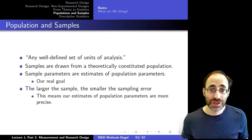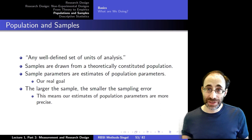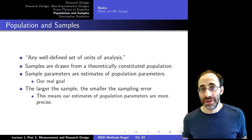In contrast, if your population is individuals living in North Carolina this year, that's your population. This is all determined by the theory that you put forward. Samples are drawn from this theoretically determined population. The population can be big or small, but it's often bigger than you can reasonably take data on.